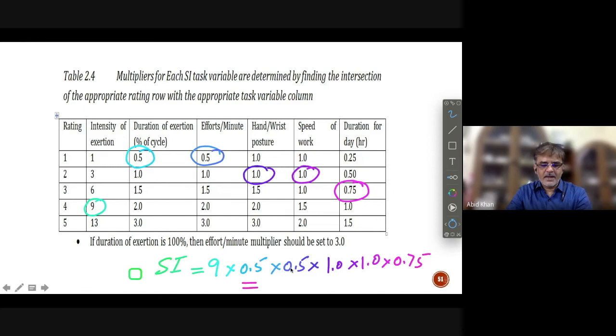So in those kind of demanding tasks, we have to apply this strain index as an evaluation parameter. So in this case, the strain index we are getting is 1.6875. So this is a particular value.